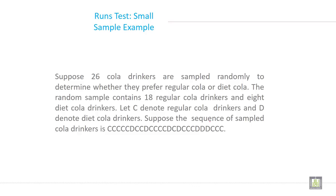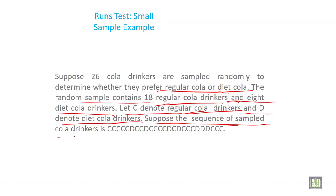Suppose 26 cola drinkers are sampled randomly to determine whether they prefer regular cola or diet cola. The random sample contains 18 regular cola drinkers and 8 diet cola drinkers. Suppose the sequence of sampled cola drinkers is shown, where C denotes regular cola drinkers and D denotes diet cola drinkers.